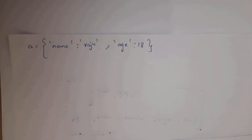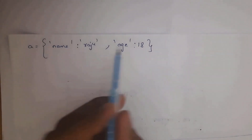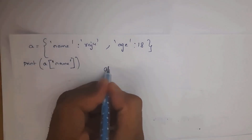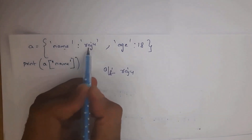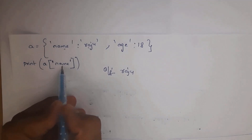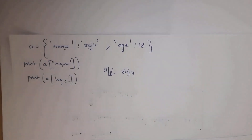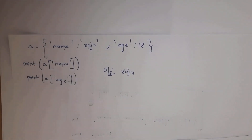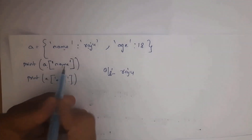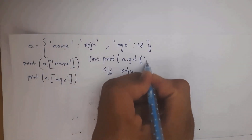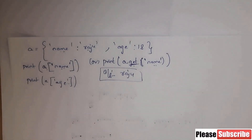To access items in a dictionary, you can use the key. For example, with a = {'name': 'raju', 'age': 18}, write print(a['name']) and you will get output 'raju'. If you write print(a['age']), you will get 18. Instead of bracket notation, you can also use the get method: print(a.get('name')) will also return 'raju'. Both approaches work to retrieve values by key.